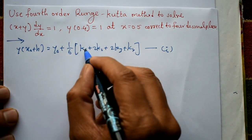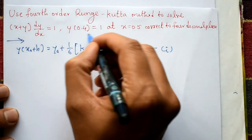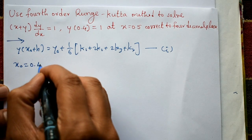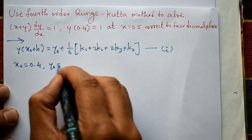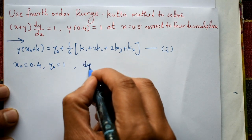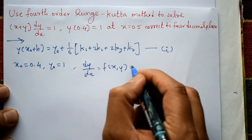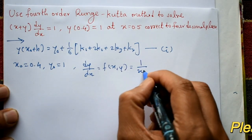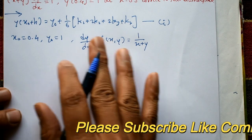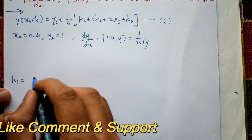Next, we calculate the k values. The initial condition gives x₀ = 0.4 and y₀ = 1. From the ODE, dy/dx = f(x, y) = 1/(x + y).